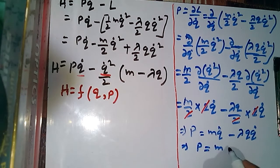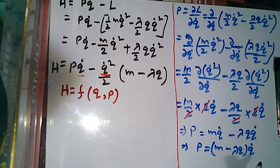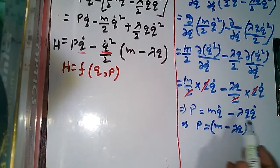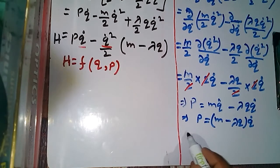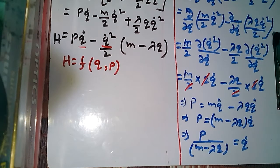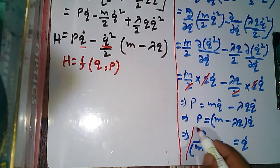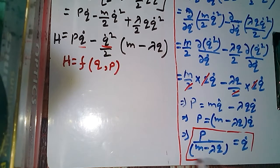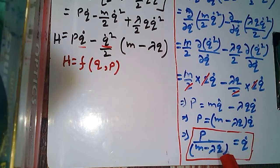Taking q̇ as common from both terms: p = q̇(m - λq). Solving for q̇, we get q̇ = p/(m - λq). We can see that q̇ is now expressed purely as a function of p and q, which is exactly what we needed.